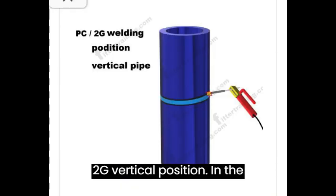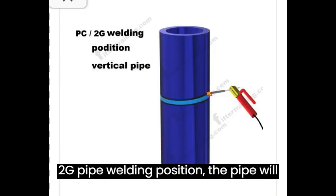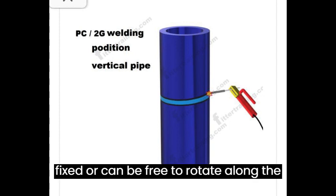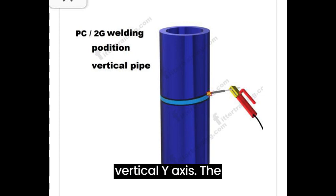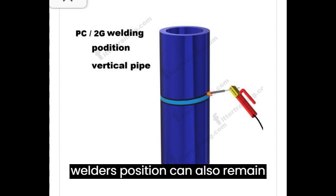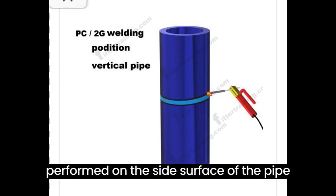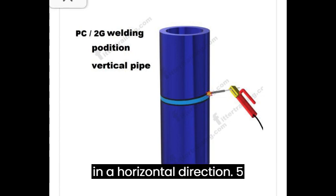In the 2G pipe welding position, the pipe will be in the vertical position and it can be fixed or free to rotate along the vertical Y axis. The welder's position can also remain stationary or can move around the pipe. Welding is performed on the side surface of the pipe in a horizontal direction.